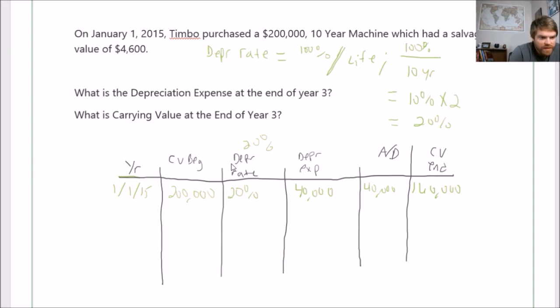Now beginning of next year, your carrying value changes. You move the carrying value at the end down to the next year. So now at the beginning of 2016 your carrying value is now $160,000.